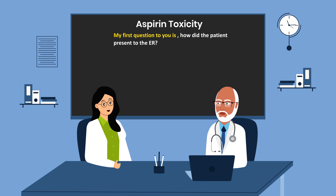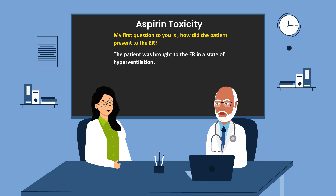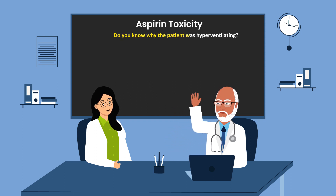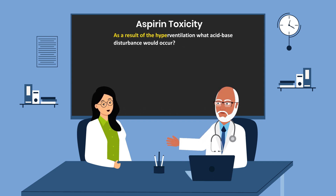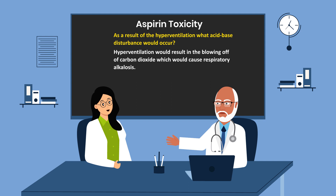How did the patient present to the ER? The patient was brought to the ER in a state of hyperventilation. Do you know why the patient was hyperventilating? The patient was hyperventilating because aspirin stimulates the respiratory center in the medulla oblongata. As a result of hyperventilating, what acid-base disturbance would occur? Hyperventilation would result in the blowing off of carbon dioxide, which would cause respiratory alkalosis.